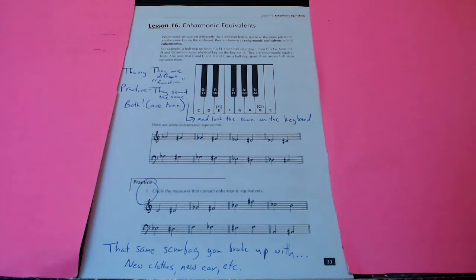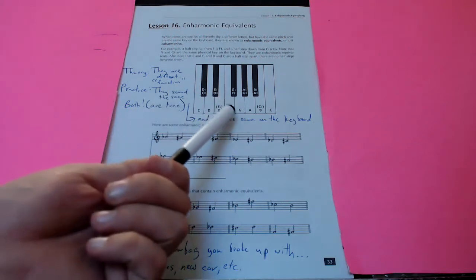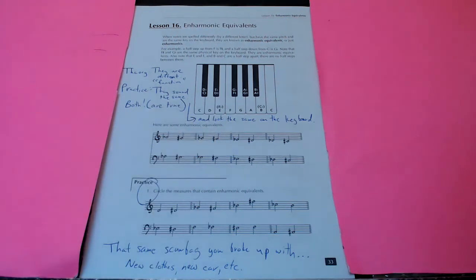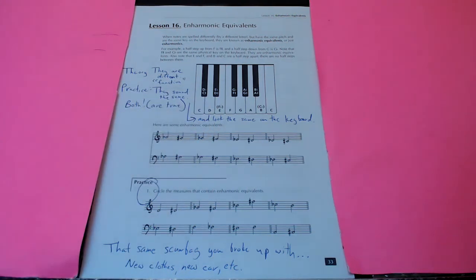So, let's take F flat here. F flat and E are the same note. Exactly the same note, because they're right next to each other on the keyboard. If you flat an F, you get to that key. If you just want an E, you push an E there, and it's the same thing.